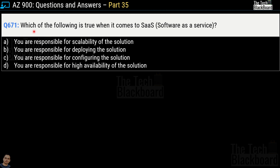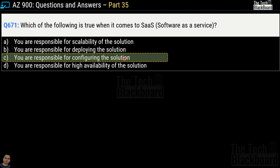Question number 671: which of the following is true when it comes to SaaS or software as a service? Options: you are responsible for scalability, deploying the solution, configuring the solution, or high availability. The correct answer is option C — you are responsible for configuring the solution. Scalability, deployment, and high availability are all handled by Microsoft Azure. A simple example of SaaS is Gmail — you never care about deployment or high availability; you only configure your settings, and the email provider handles everything else.